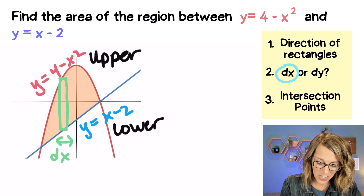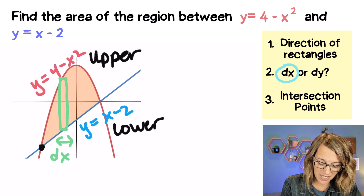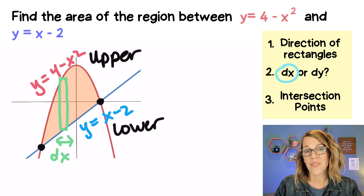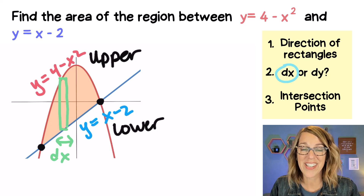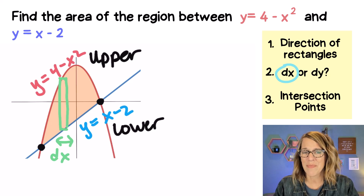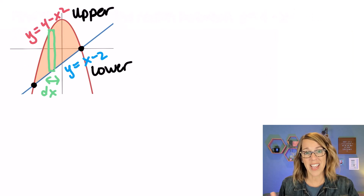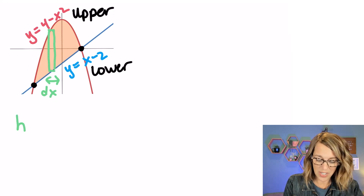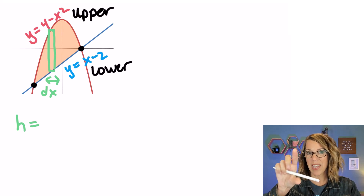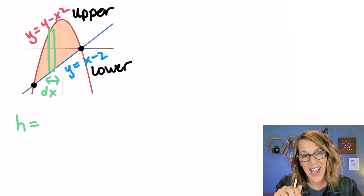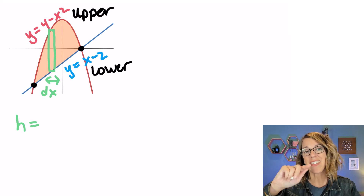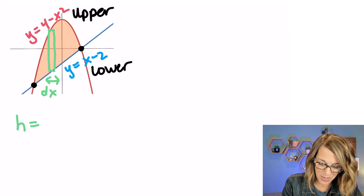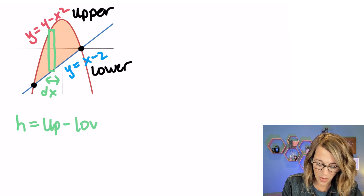Those limits of integration are going to be the x values that I get from the first intersection point and the x value from that second point. Now I'm going to use these rectangles, so I want to come up with my height. My height is going to be the distance between my two curves. With my rectangle oriented up and down, that height is going to be the upper minus the lower — the difference between those two. So I'm just going to write upper minus lower.